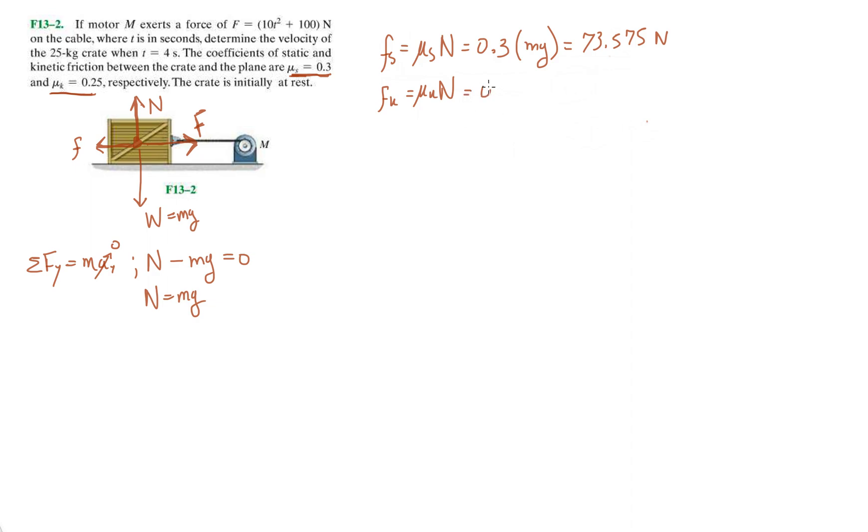The kinetic friction term is going to be 0.25 times mg, and that's equal to, let's see, 61.3125 newtons. Well, 61.3125 newtons, okay?